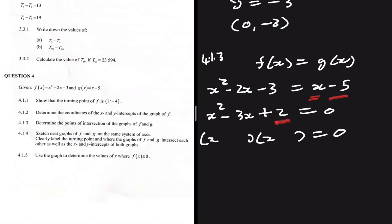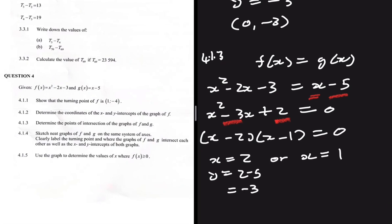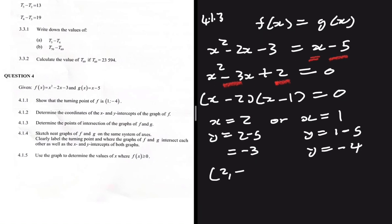We need two numbers that multiply to give 2 and add to give minus 3: that is minus 2 and minus 1. So (x minus 2)(x minus 1) equals 0, giving x equals 2 or x equals 1. To find the y values, we use g(x): when x equals 2, y equals 2 minus 5 equals minus 3. When x equals 1, y equals 1 minus 5 equals minus 4. So the points of intersection are (2, minus 3) and (1, minus 4).